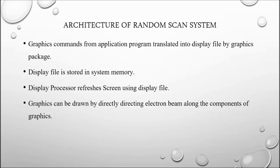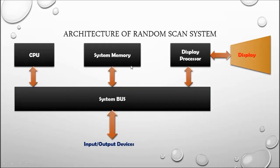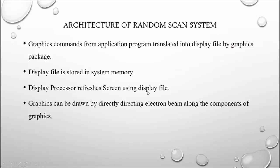If there is a command related to a line, that line can be directly drawn using the electron beam. The display file is stored in memory and contains the graphics commands, and based on those commands, the random scan system directly plots the objects.